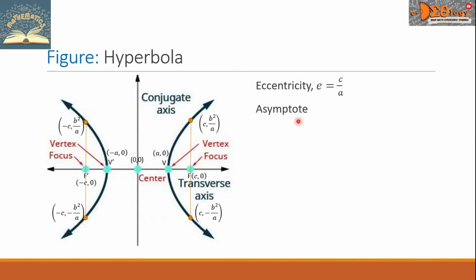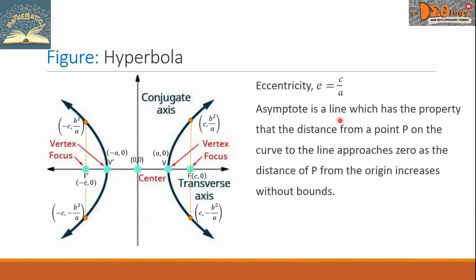Now, the asymptote. The asymptote is a line which has the property that the distance from a point P on the curve to the line approaches zero as the distance of P from the origin increases without bounds. For hyperbola, there are two asymptotes. This is the first and this is the second. The equation of the first asymptote is Y equals B over A times X, while the second asymptote has equation Y equals negative B over A times X.